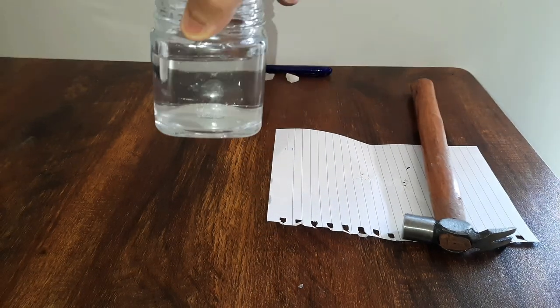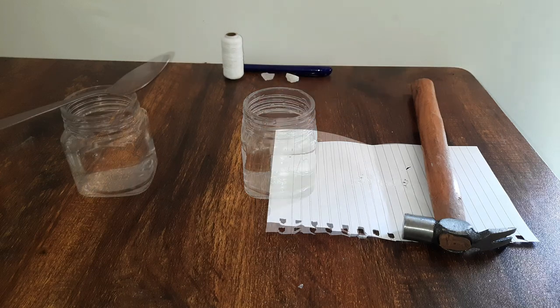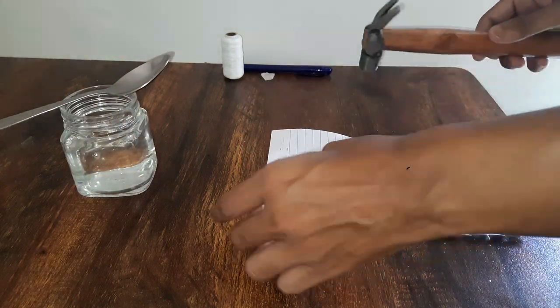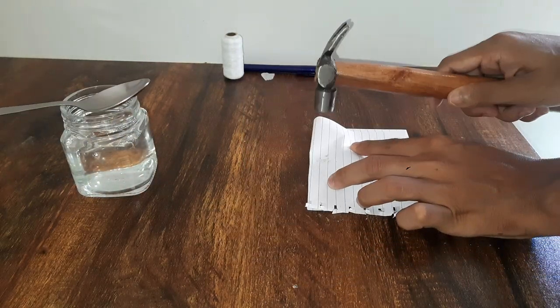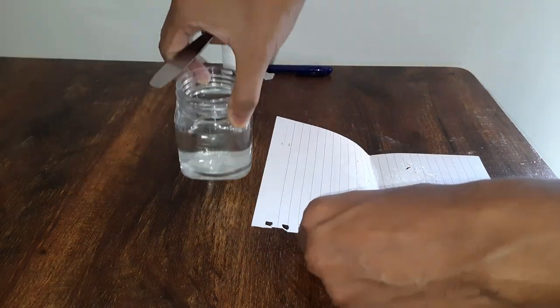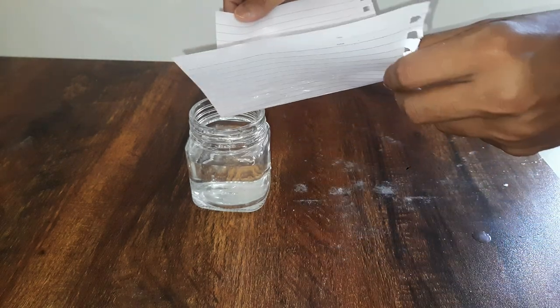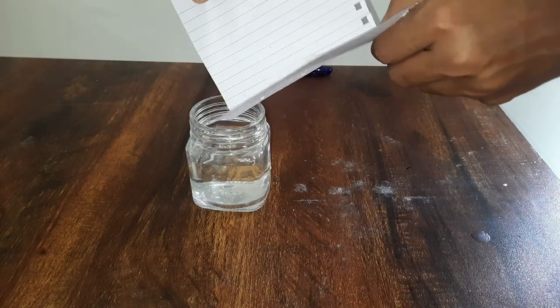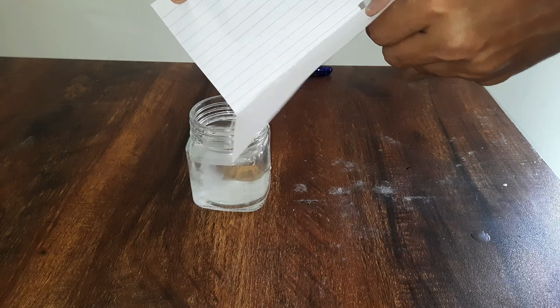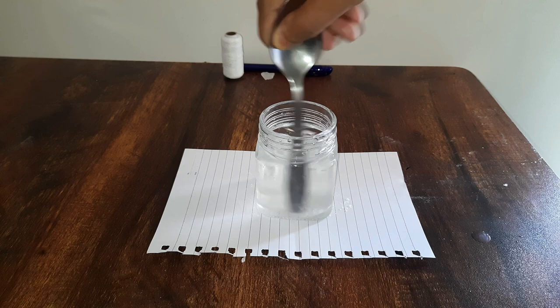So we see all the alum has been dissolved. Now we will crush some more alum crystals and then again add the powdered alum into this water. Now again we will try and dissolve it.